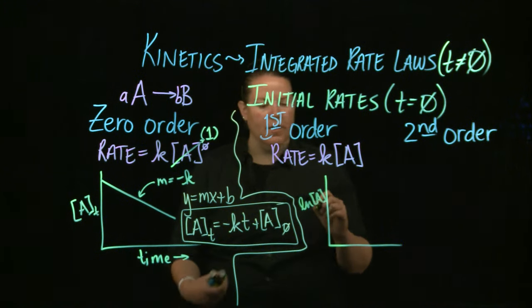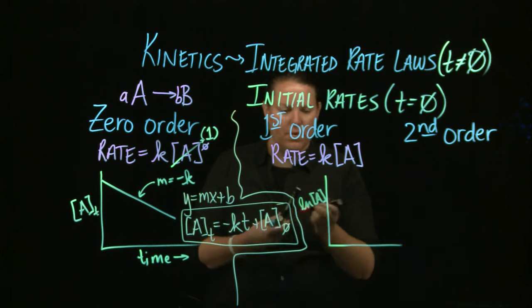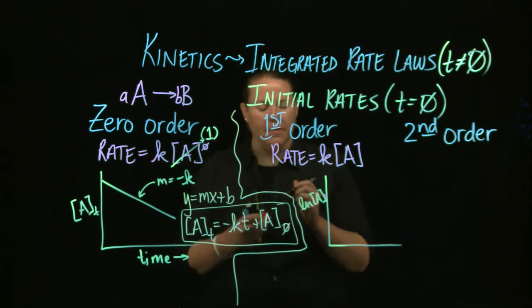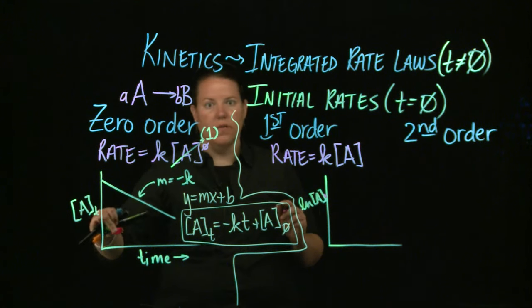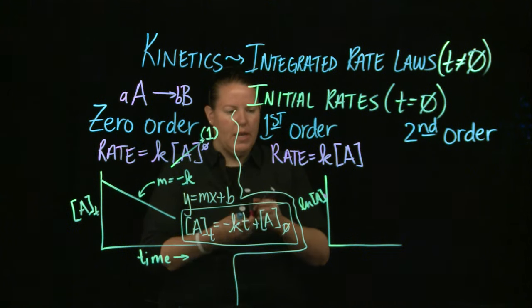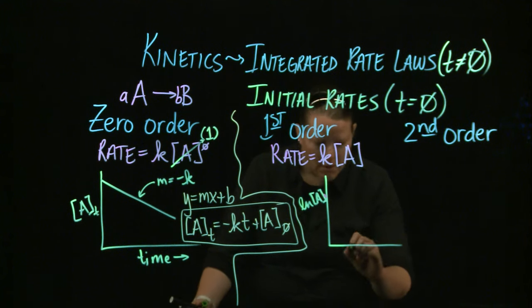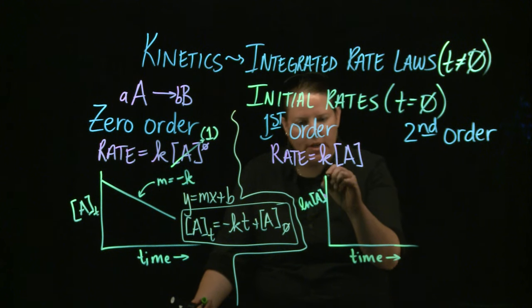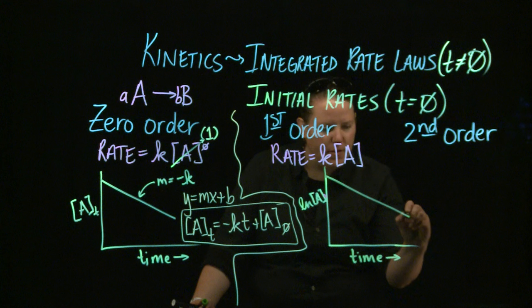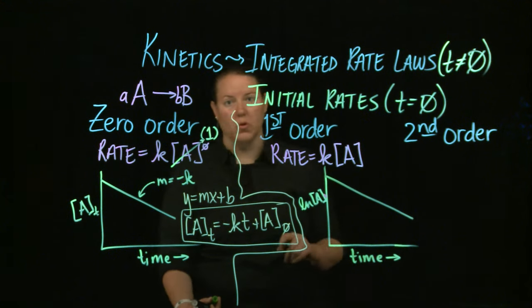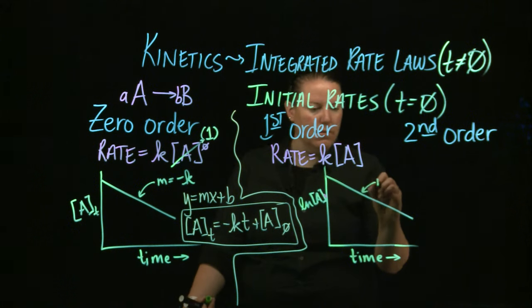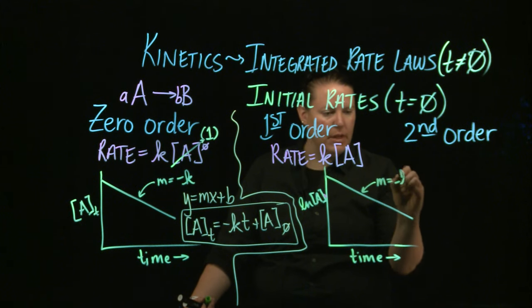And this is going to be the natural log of A. Realize that that's over time. I can't really fit the T in here. There it is, the T, right, it's just like this little T over here. It's A over time. And that's versus time. And that gives me a nice straight line. We want a nice straight line because then we can make direct proportionalities between things. And my slope here is still M is equal to negative K.